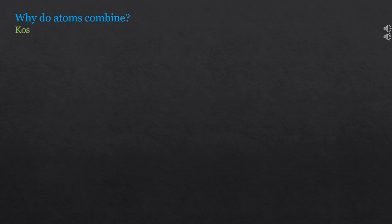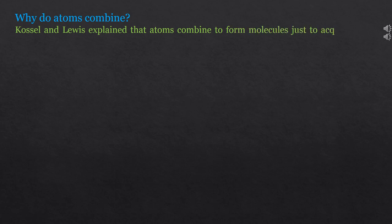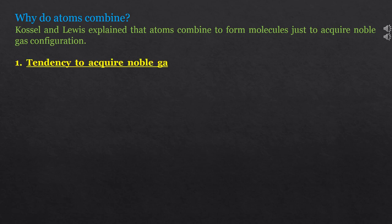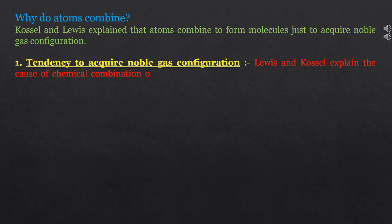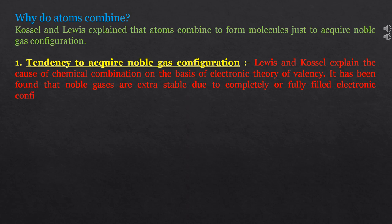Let's try to find out the answer to our first question — why do atoms combine? Kossel and Lewis explained that atoms combine to form molecules just to acquire noble gas configuration. So, the first factor is tendency to acquire noble gas configuration. Lewis and Kossel explained the cause of chemical combination on the basis of electronic theory of valency.